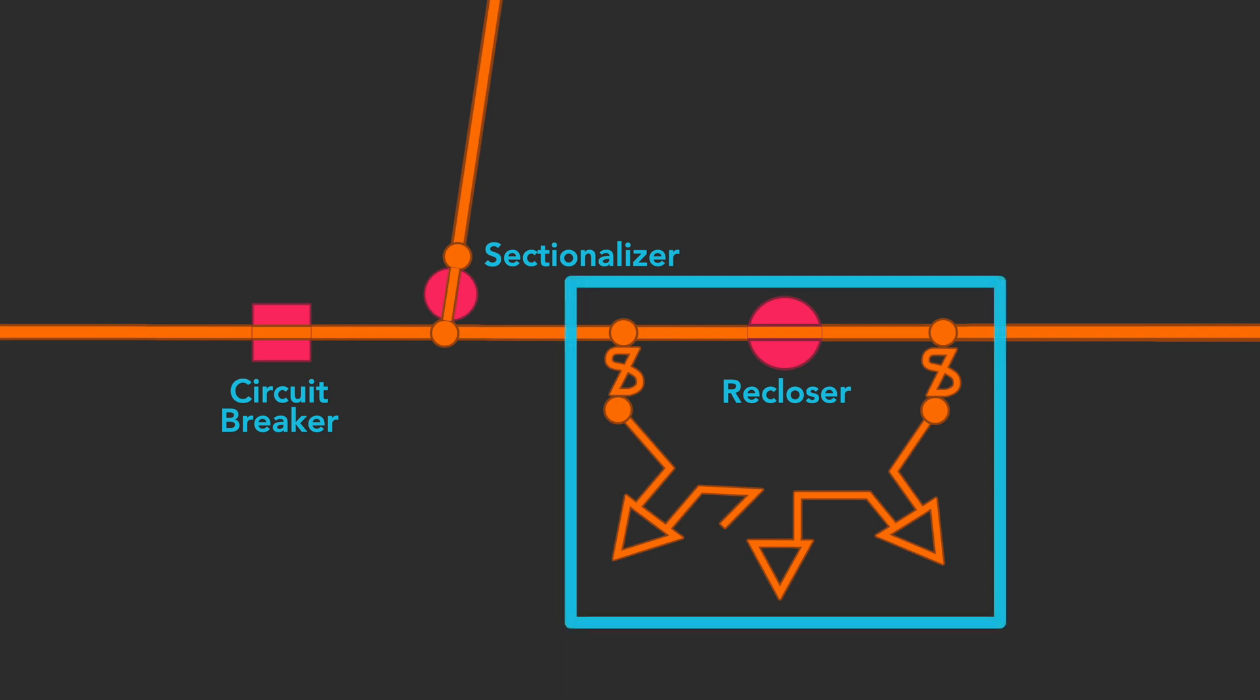This URD system is called an open loop because the primary circuit is open at one transformer connection. And finally, a recloser is used to sectionalize the feeder.